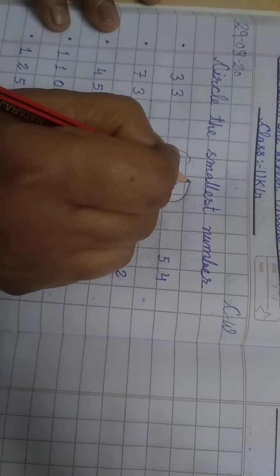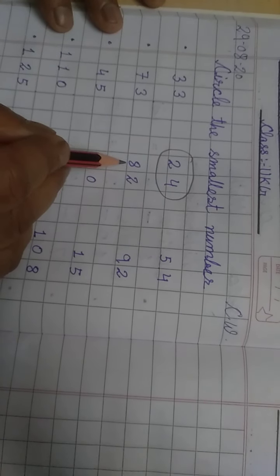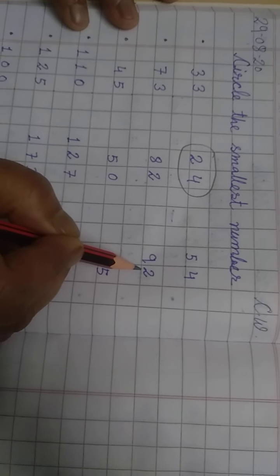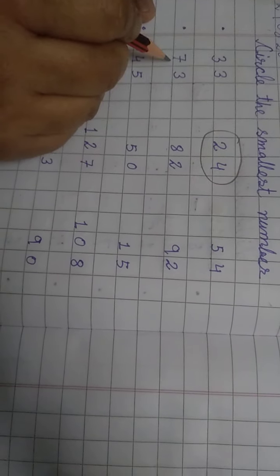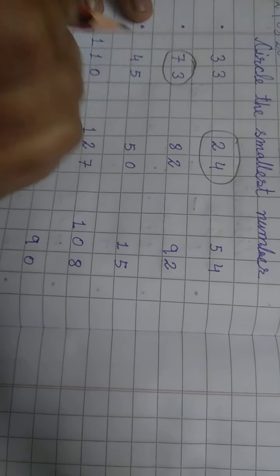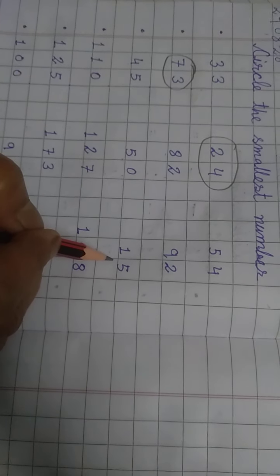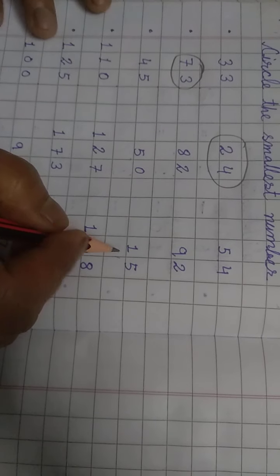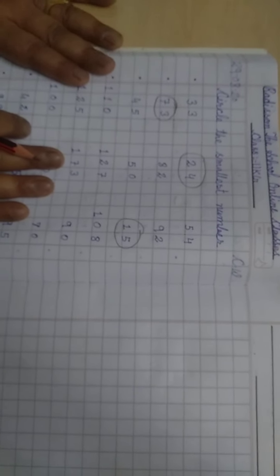Okay next, 73, 82 and 92, which number is smallest? 73. Okay next, 45, 50 and 15. 15 तो बहुत ही पहले आता है तो 15 is smallest number. Okay, आप कर लेंगे ना पूरा, अच्छा। आशा करती हूं मेरे पास भेजोगे, okay bye.